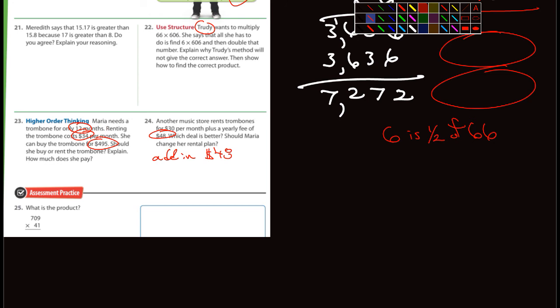And then 25 here. What's the product? 7.09 times 41. You guys can do that. Okay, that's it. Easy peasy. I will see you guys tomorrow.